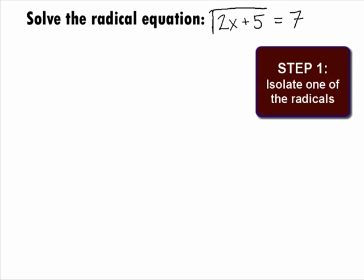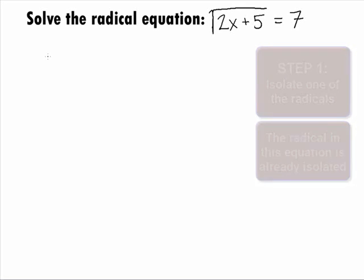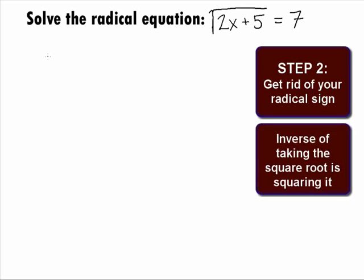In Step 1, we want to isolate the radical. The radical in this equation is already isolated. In Step 2, we want to get rid of the radical sign. In this problem, we have a square root for a radical. The inverse of taking the square root of an expression is to square it. When we square the square root, we will end up with just the radicand, which is what is inside the square root.